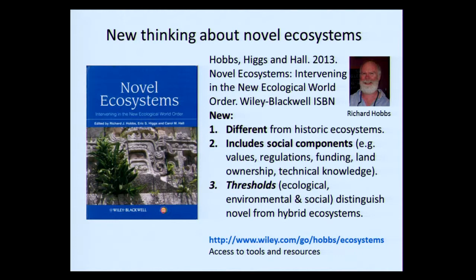There's new thinking about novel ecosystems — it's a young field that didn't exist more than 20 years ago. In 2013, a book was published about novel ecosystems based on a workshop held in Australia. It added to the definition: besides being different from historic ecosystems, they include social components — people, their values, funding, land ownership — and the concept of thresholds, beyond which an altered ecosystem can never be returned to its original state.